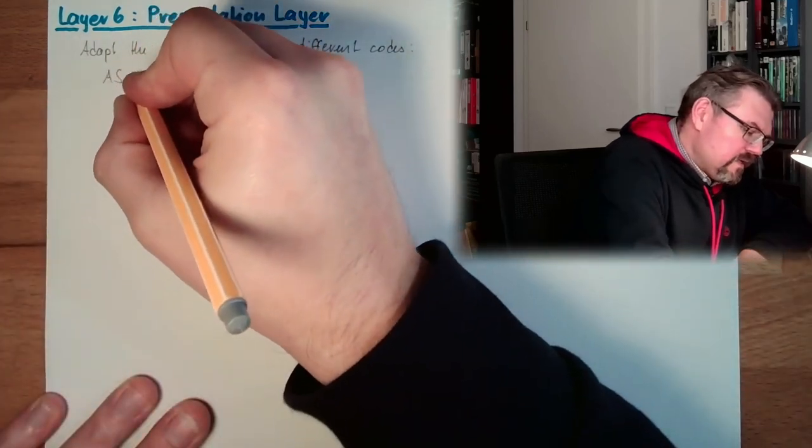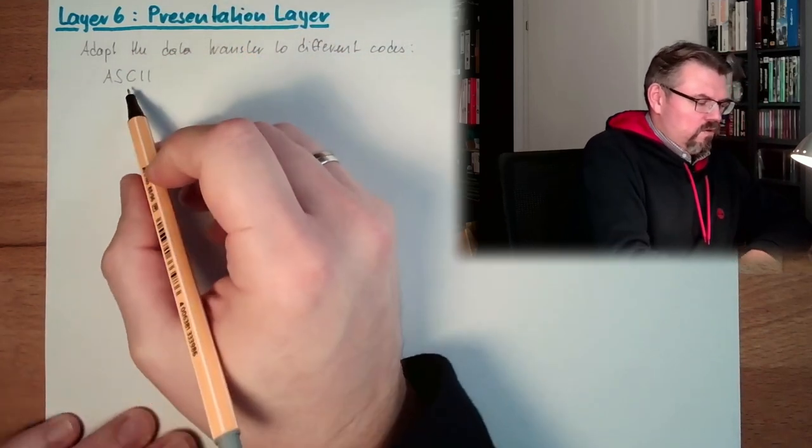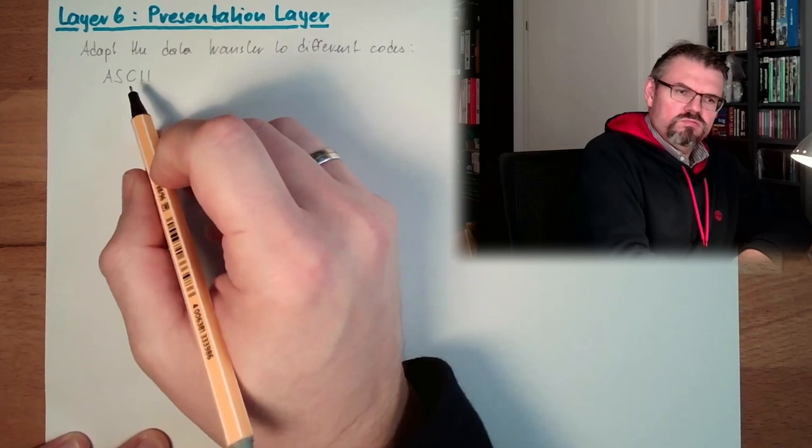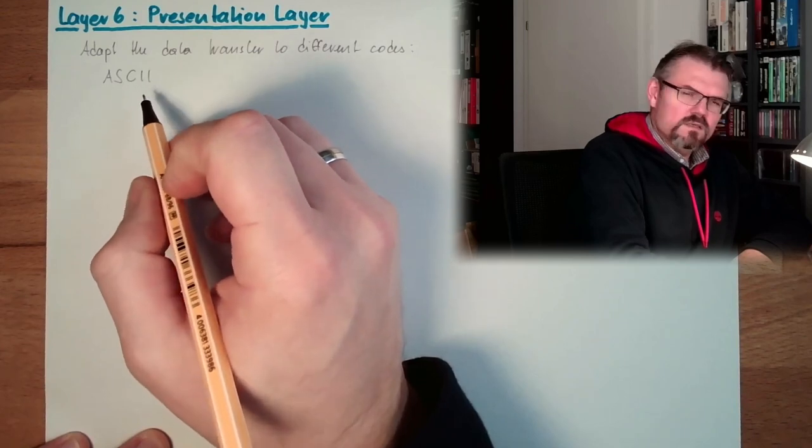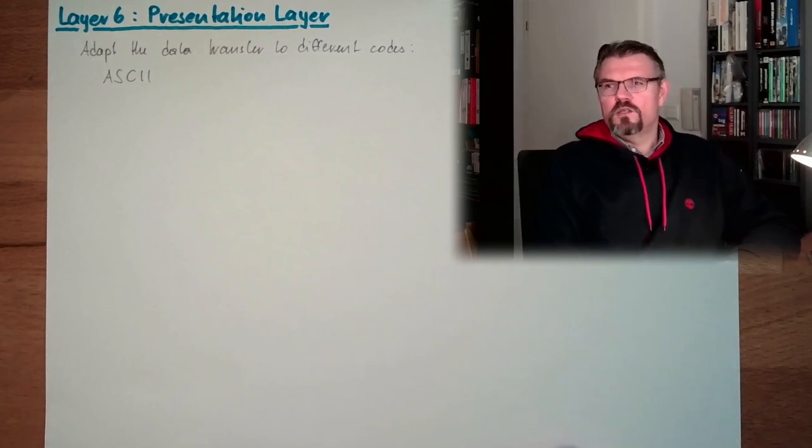So there's, for instance, ASCII: American Standard for Communication, Information Interchange, something like this. For information exchange. American Standard for Information Exchange.